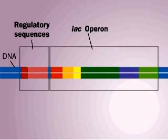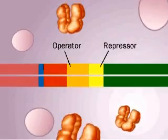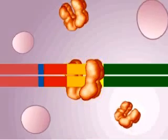Now let's look at the control sequences, the promoter and operator, for the structural genes. The operator overlaps the promoter. If a repressor molecule is present, it can bind the lac operator.